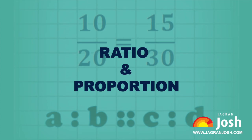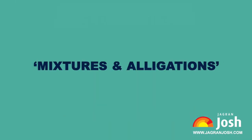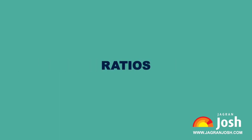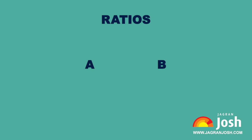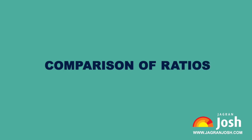Ratio and proportion is one of the easiest concepts from a competitive exam perspective. Questions from this concept are mostly asked in conjunction with other concepts like mixtures and allegations. The ratio of two quantities A and B in the same units is the fraction A upon B, written as A is to B, where A is called the antecedent and B is called the consequent.